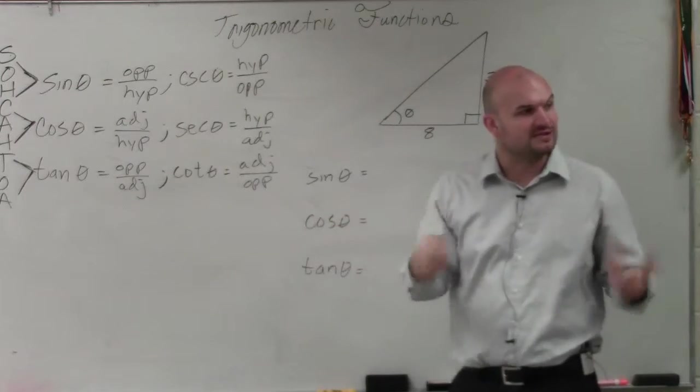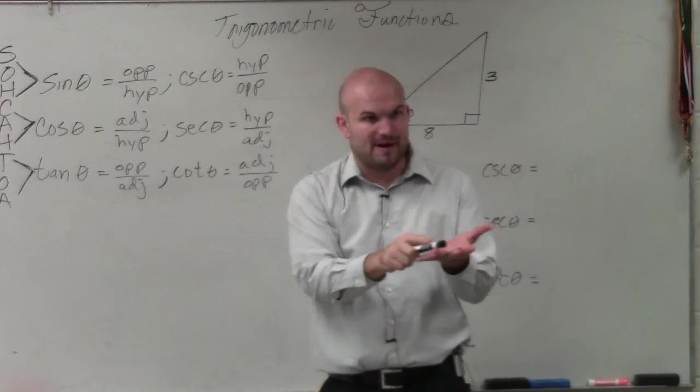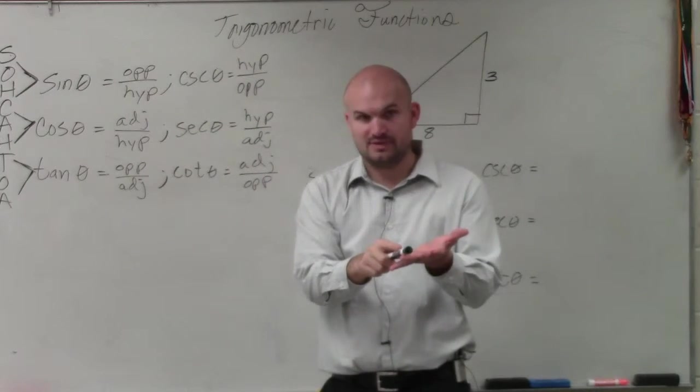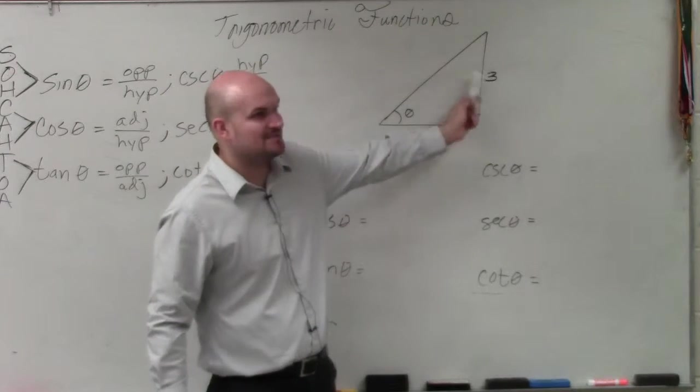to evaluate for sine, cosine, or tangent of an angle, you have to know what the adjacent, the opposite, and the hypotenuse is. Do we know what the adjacent, opposite, and hypotenuse are?